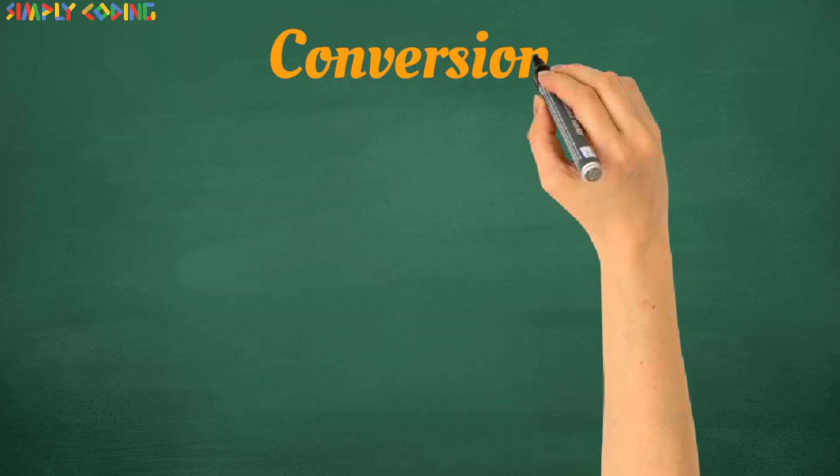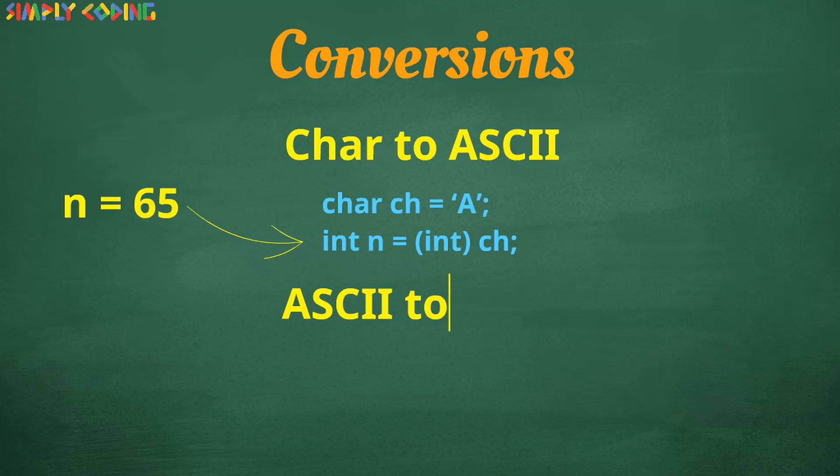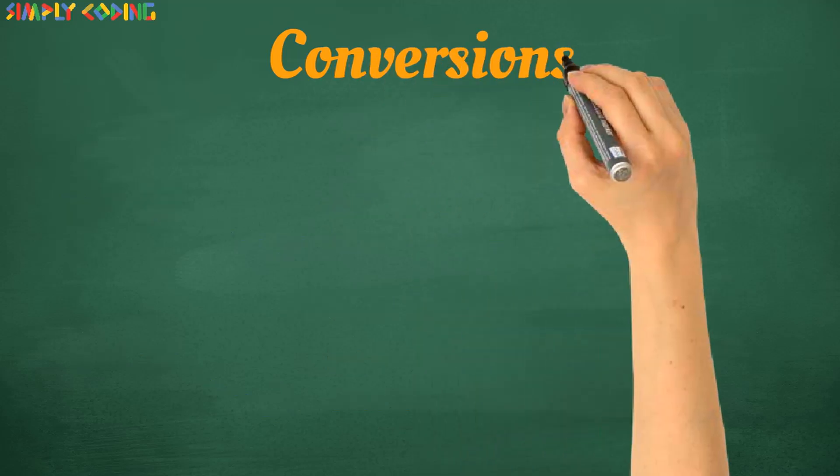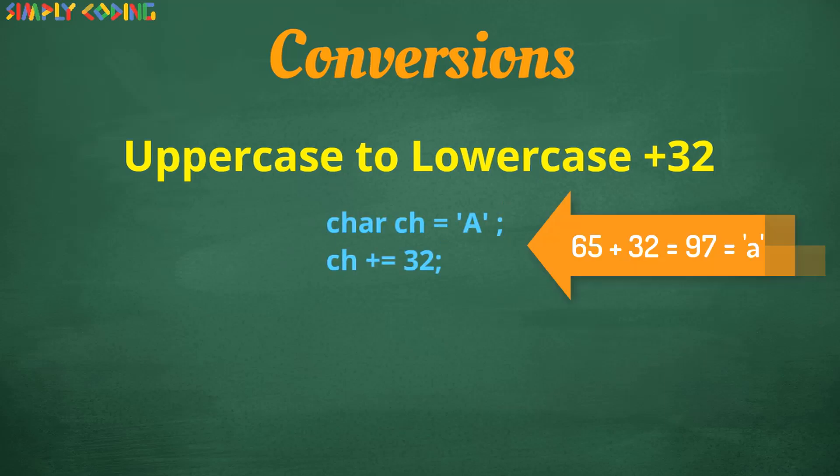Let's take a look at some conversion questions. If you need to get ASCII code for capital A, you can typecast the char into int. Here n will print 65. And if you need to convert ASCII code 97 to char, you can typecast it into char. Here c will have value small a. Also note the way to convert uppercase to lowercase is by adding 32. So here we have added 32. So ASCII code will become 65 plus 32 which is 97 which is the code for small a.